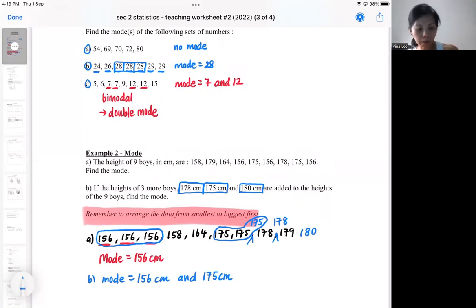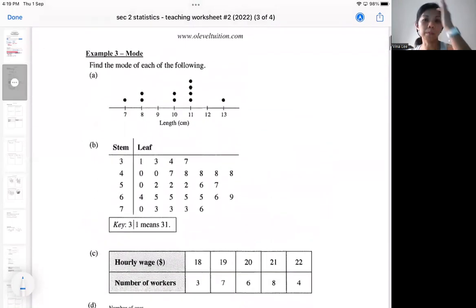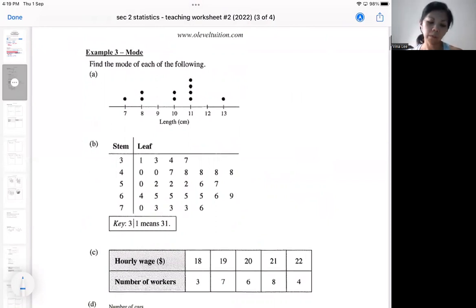Subsequently, we still have some examples on mode. In the previous chapter, the previous teaching worksheet, we learned about dot diagrams. So right now in a dot diagram, we can also be telling the mode. The one with the most number of dots will be the most popular. If you look, this one is very popular because there are four dots. So my mode is 11 centimeters.